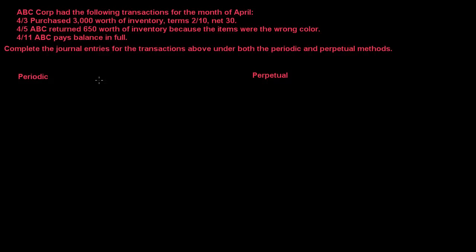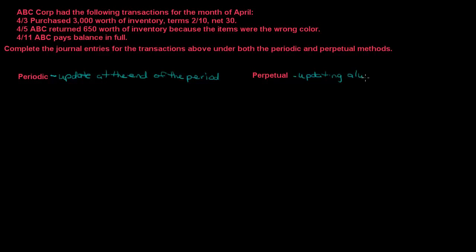There are two methods a company could use: the periodic method or the perpetual method. Under the periodic method we update at the end of the period. Under the perpetual method we are updating always — perpetual means continuously — so we are always updating inventory whenever we have a transaction.